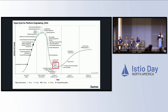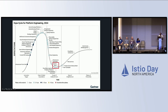On the far left you can see the innovation trigger — early stage technologies that are potentially breakthroughs, with lots of proof-of-concept work and media attention. Then you've got the peak of inflated expectations, where lots of early publicity and adoption happen, but people tend to think the technology does more than it actually does. Then the trough of disillusionment, which is where service mesh currently sits. After that, the slope of enlightenment, and finally the plateau of productivity where mainstream adoption takes off.